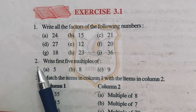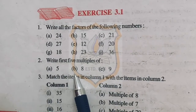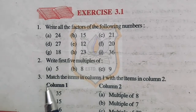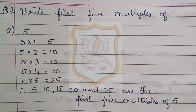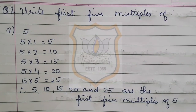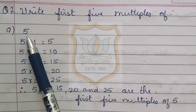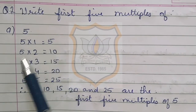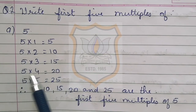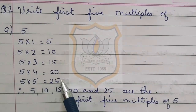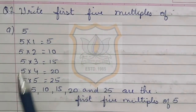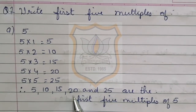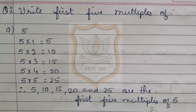Exercise 3.1, Question number 2: write the first 5 multiples of A) 5, B) 8, and C) 9. Solution for sum A: multiples means we write down the table. Table of 5 up to 5 times: 5, 10, 15, 20, 25. Therefore, 5, 10, 15, 20, and 25 are the first 5 multiples of 5.